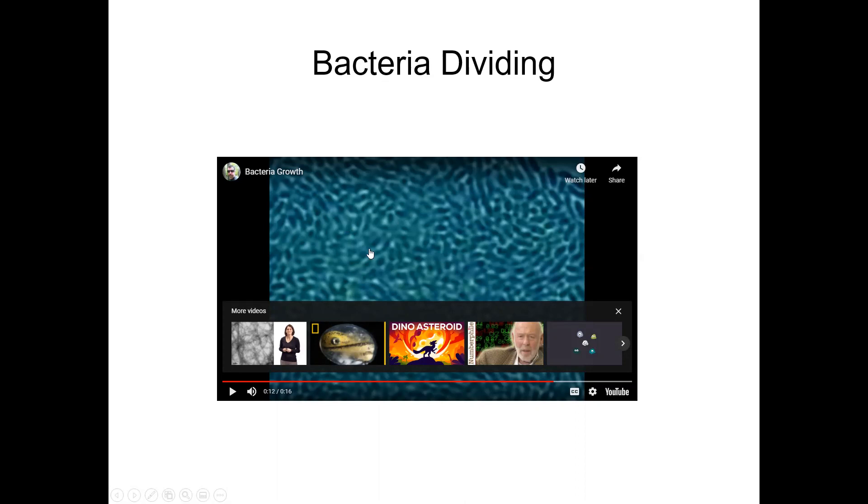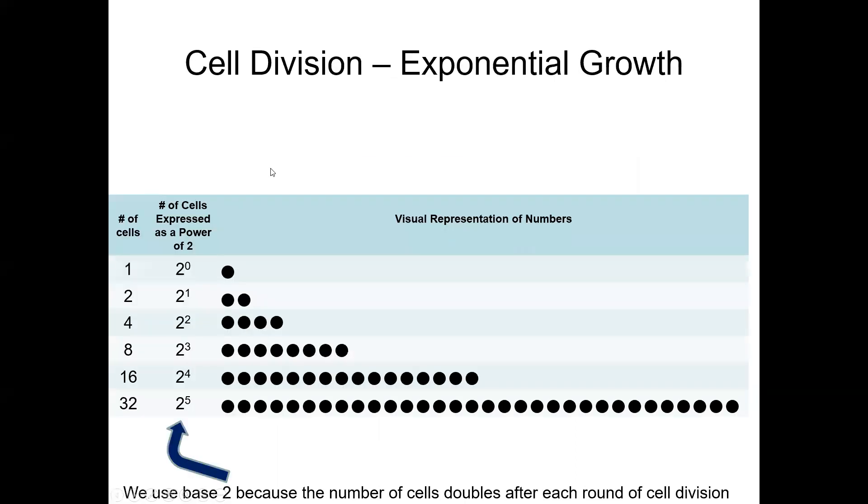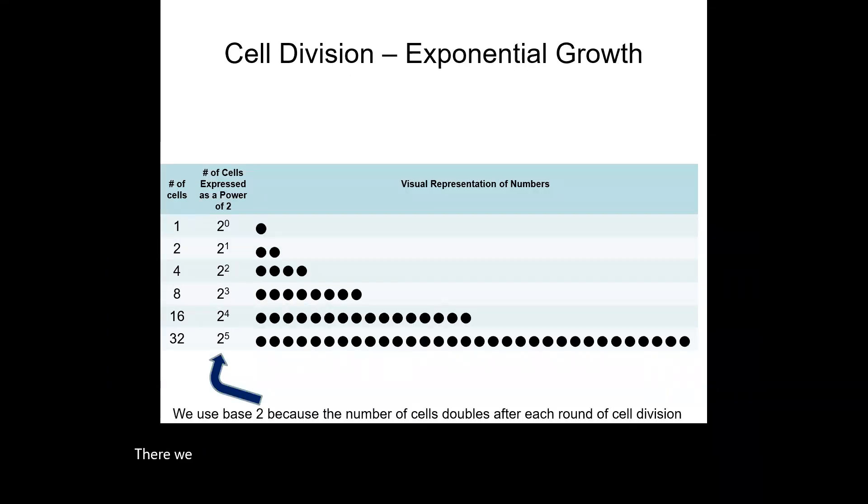But if you could hear the sound, they were saying that one cell dividing, on the video you were seeing one round of cell division happening about every 20 minutes. And so they said that in 24 hours, a single cell could become like five billion billion cells. You would get a lot of cells over a short period of time.